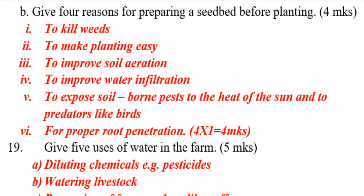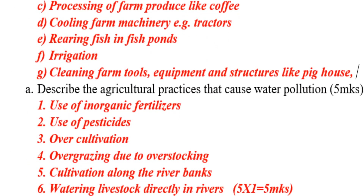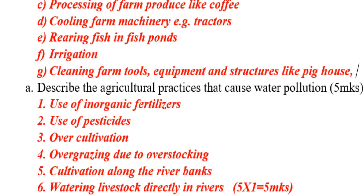Question number nineteen: give five uses of water on the farm. This one is very simple — every agriculture student should get all the marks. Number one, it is used in diluting chemicals, e.g. pesticides. Number two, it is used in watering livestock. Number three, processing of farm produce like coffee. Number four, for cooling farm machinery like tractors. Number five, for rearing fish in fish ponds. Number six, for irrigation. Number seven, for cleaning farm tools, equipment, and structures like the pig house.